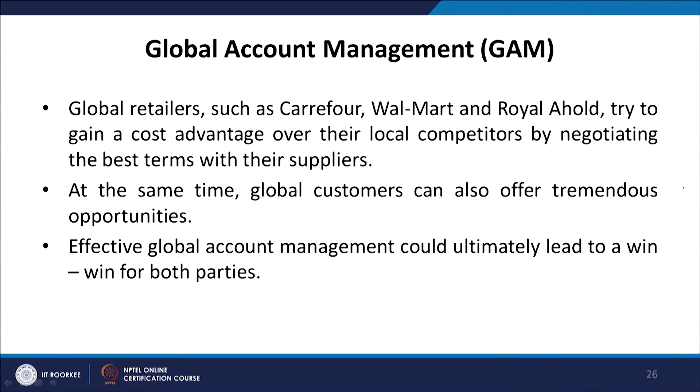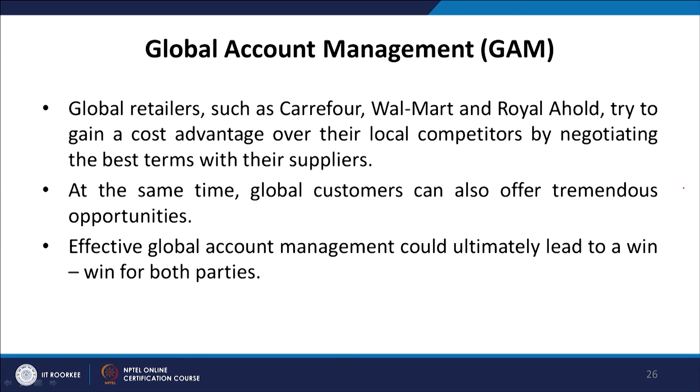Global retailers such as Carrefour, Walmart, and Royal Ahold try to gain a cost advantage over local competitors by negotiating the best terms with suppliers — where one supplier serves 50 countries. Because Suzuki is a much bigger company, it has the power to negotiate with these suppliers. Global account management should ultimately lead to a win-win situation for both parties: Suzuki benefits from consistent global supply, while vendors sell to just one major company across the world.